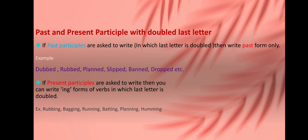Now next topic, past and present participles with doubled last letter. If past participles are asked to write in which the last letter is doubled, then write past form only. For example, dubbed, rubbed, planned, slipped, banned, dropped. But if present participles are asked to write, then you can write -ing forms of the words in which the last letter is doubled. For example, rubbing, bagging, running, batting, battling, planning, humming.